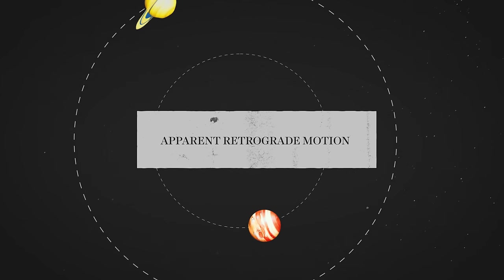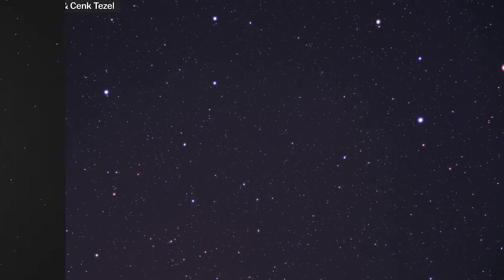Apparent retrograde motion is when the planets appear to temporarily change the direction of their orbit. They don't change direction, it just looks that way from Earth. It's an illusion that unfolds over a matter of weeks or months.